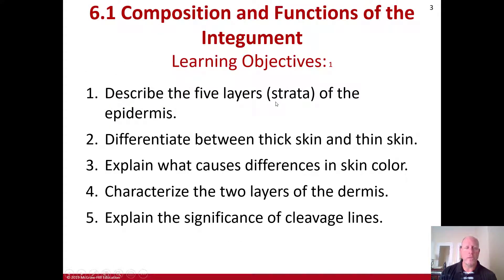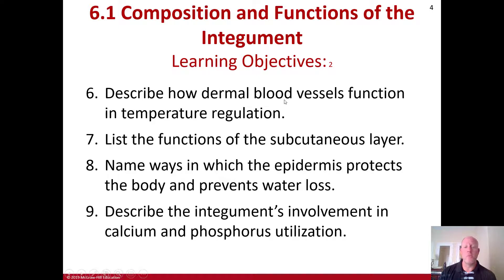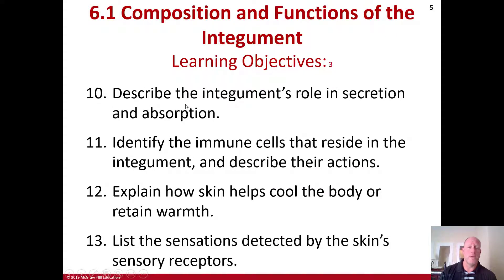Things you should be able to do with this section: describe the composition and functions of the integument, describe the five layers or strata of the epidermis, differentiate between thick skin and thin skin, explain what causes differences in skin color, characterize the two layers of the dermis, explain the significance of cleavage lines, describe how dermal blood vessels function in temperature regulation, list the functions of the subcutaneous layer, name ways in which the epidermis protects the body and prevents water loss, describe the integument's involvement in calcium and phosphorus utilization, describe the integument's role in secretion and absorption, identify the immune cells that reside in the integument, describe their actions, explain how skin helps cool the body or retain warmth, and list sensations detected by the skin's sensory receptors.